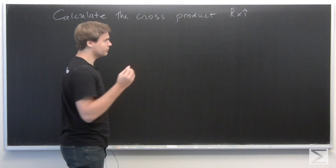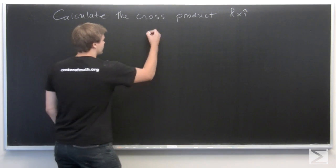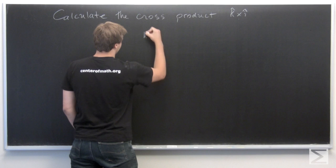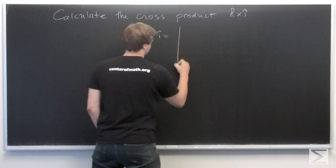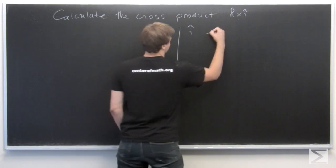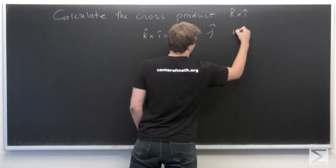Recall from this section in the book that the way we calculate this is we write out this matrix. So, i, j, k.